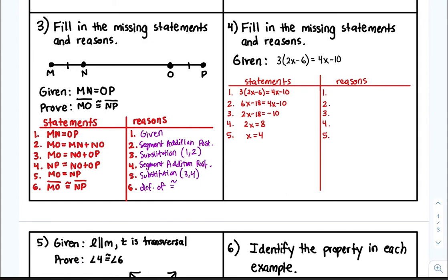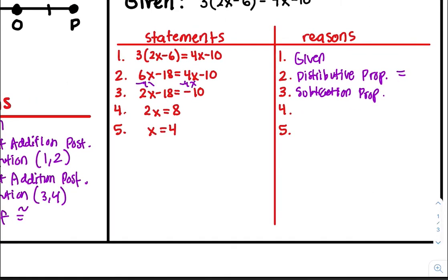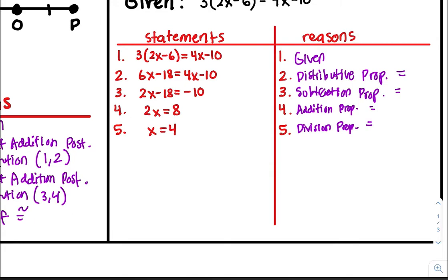Number four — we have a given statement. How do we get from step one to step two? We did the distributive property, distributing 3 to both numbers. From two to three, we did the subtraction property — subtracting 4x from both sides. To get statement four, we did the addition property — adding 18 to both sides. And lastly, the division property — dividing both sides by 2 to get x equals 4.